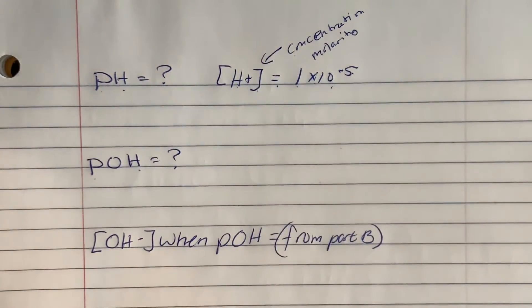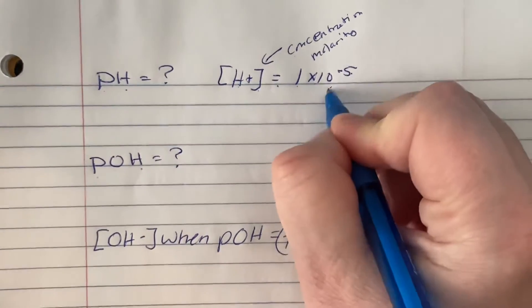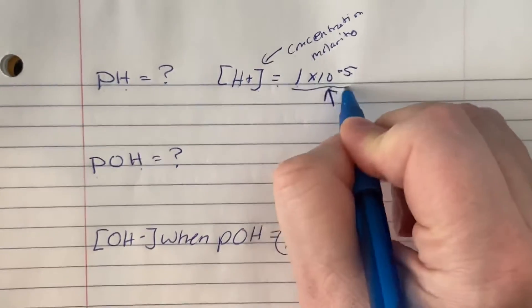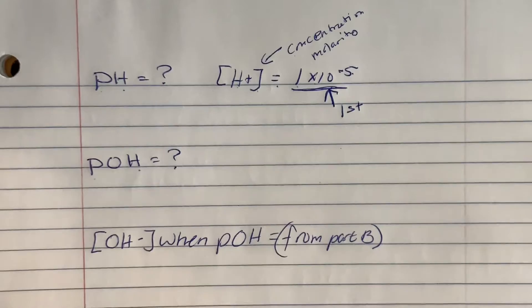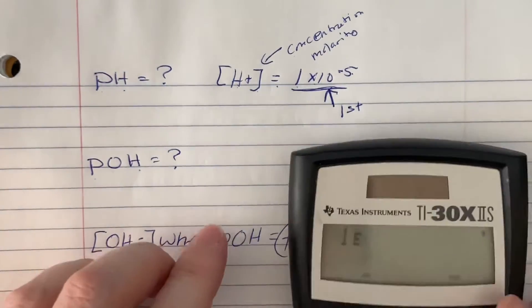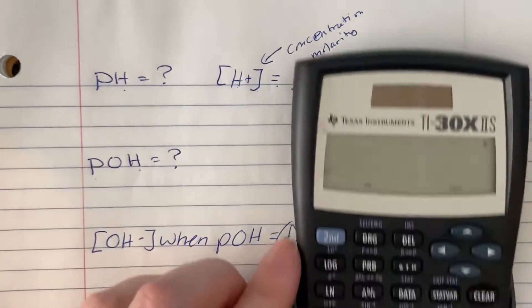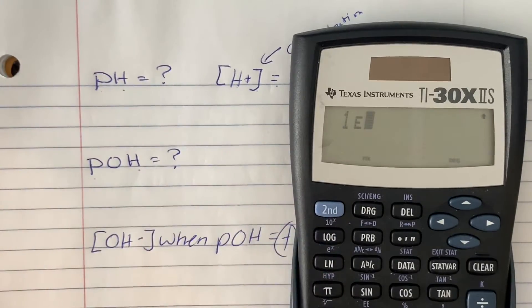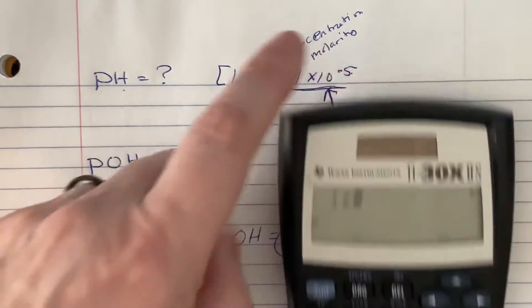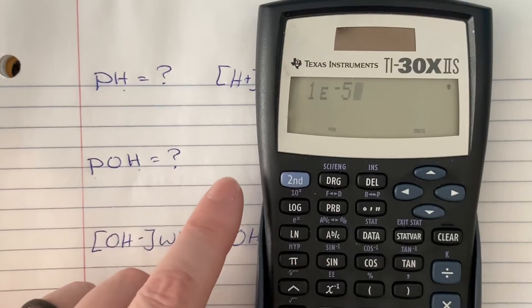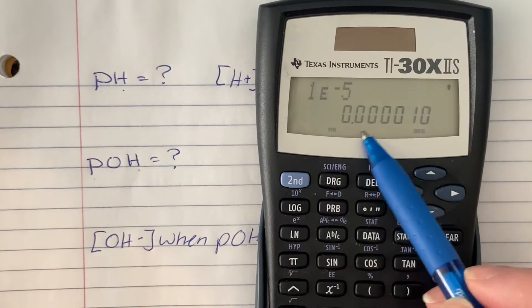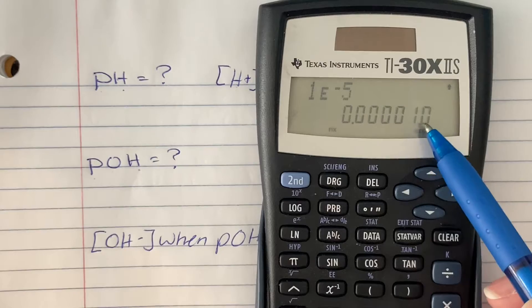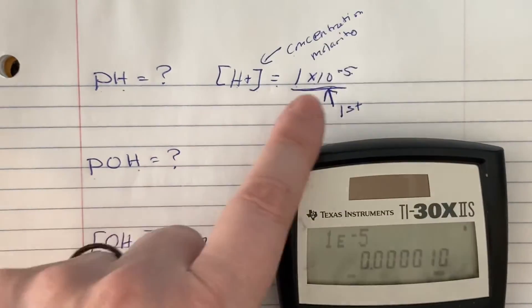So how do I input that in my calculator? Plug in this number first. So 1, use your 2nd and your E if you're on a Texas instrument. And then don't use the minus sign, use the negative 5. Hit enter to make sure it makes sense. 1, 2, 3, 4, 5. All right, it does make sense. Okay, do that first.